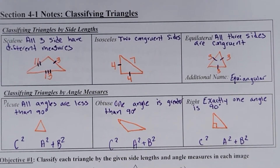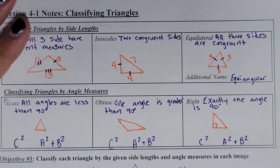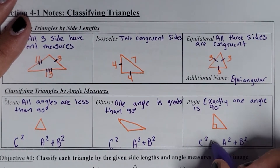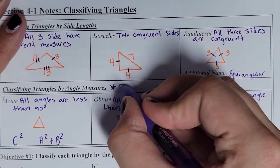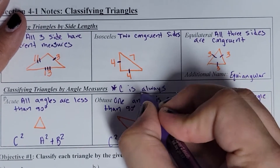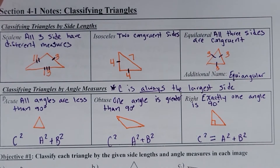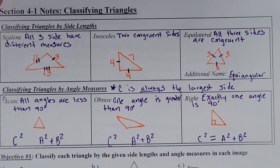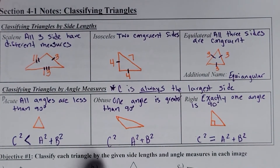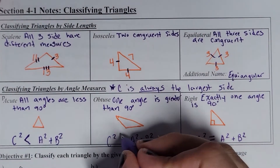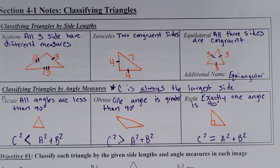Let's talk about the C squared blank A squared plus B squared relationship. Anytime you have a right triangle, A squared plus B squared always has to equal C squared, where C is always the largest side. When it's a right triangle, C squared equals A squared plus B squared. If it's an acute triangle, C squared ends up being less than A squared plus B squared. And in an obtuse triangle, C squared is greater than A squared plus B squared. This will help us determine whether our angles are acute, obtuse, or right.